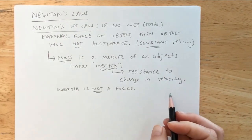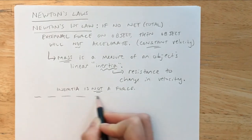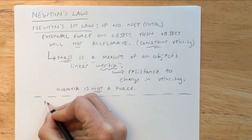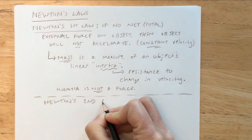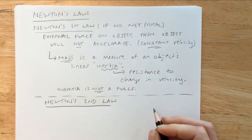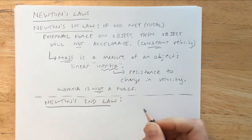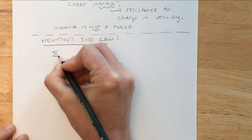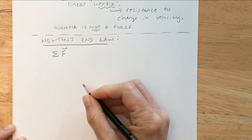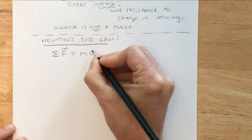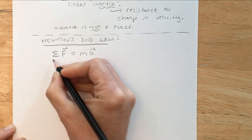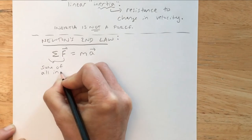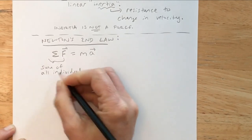That's really all we're going to talk about for Newton's first law. Related to problem solving, Newton's second law is really where all of the important stuff happens. It will be used throughout this course in various problem-solving methods. In equation form, Newton's second law states that the sum of all forces — forces being vectors — is equal to the mass of an object times its acceleration.